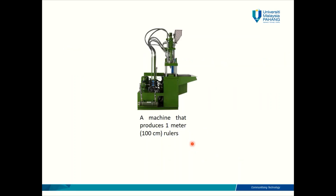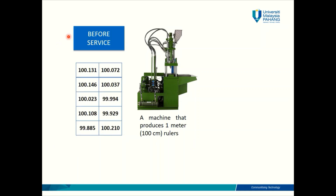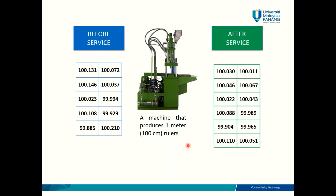Let's say you have a machine that produces one-meter rulers. This machine needs to be sent for service. Before you send the machine for service, you collect a random sample of rulers, and also after the service, you collect another random sample of rulers and measure their length. Rulers produced before service and rulers produced after service are two different populations. So now you have a case study involving two different populations.